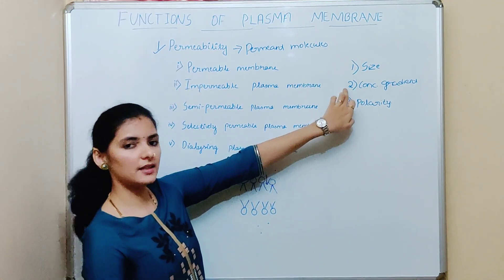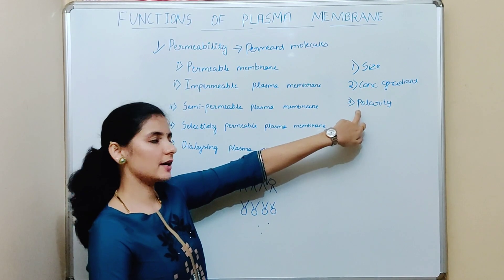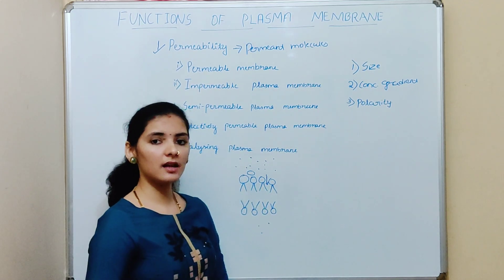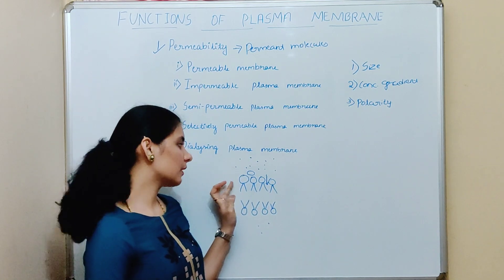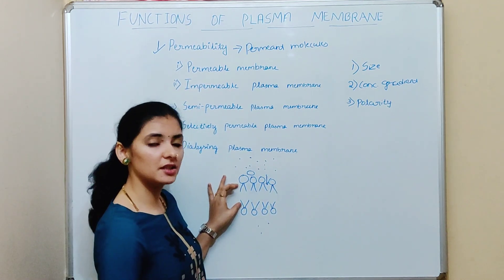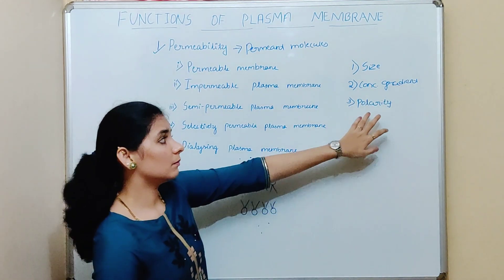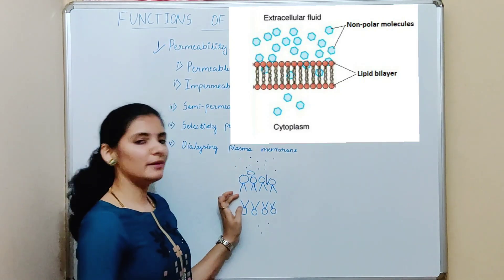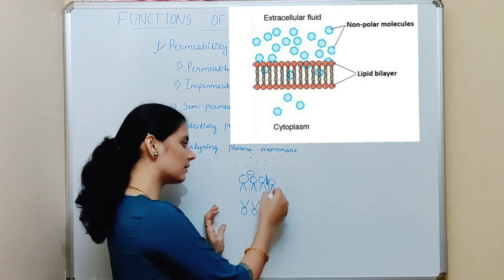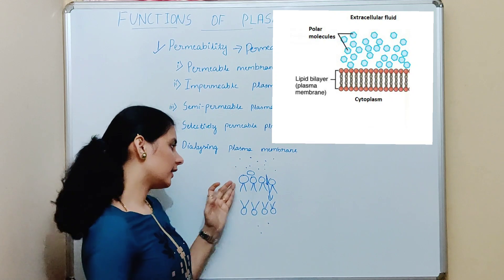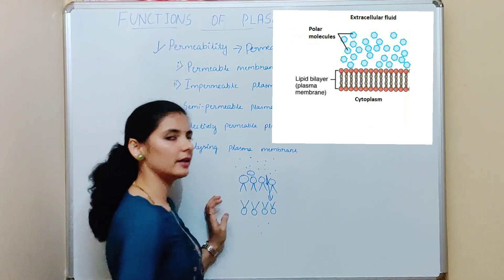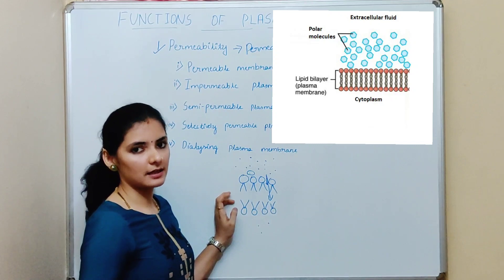The third factor is polarity. The plasma membrane is made up of lipid molecules, and all lipid molecules are amphipathic in nature. Amphipathic means having both a polar and a non-polar region. The non-polar region of the plasma membrane is dominant. Permeate molecules which are non-polar can easily make an affinity with the non-polar region of the plasma membrane and pass through it. On the other hand, polar molecules cannot interact with the non-polar part, so they cannot enter the plasma membrane easily.